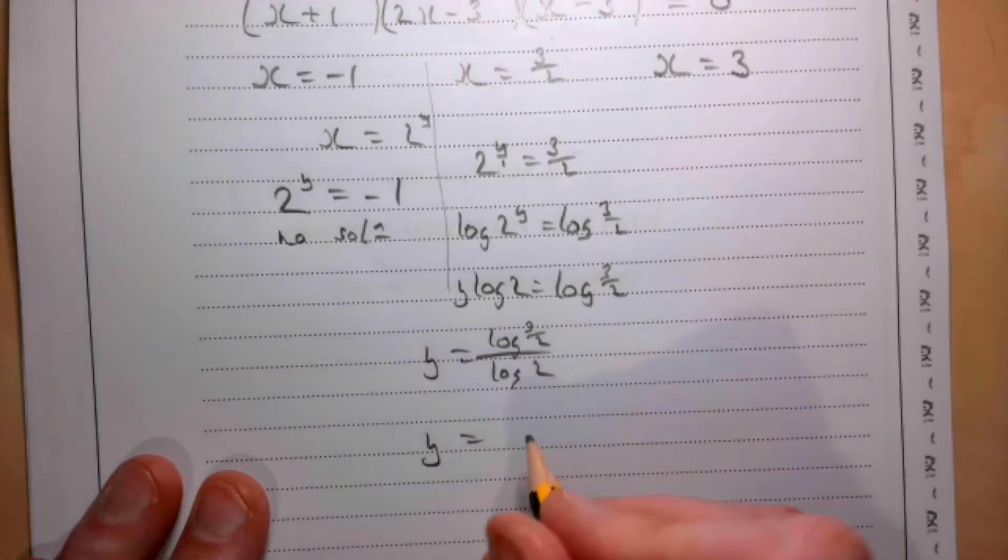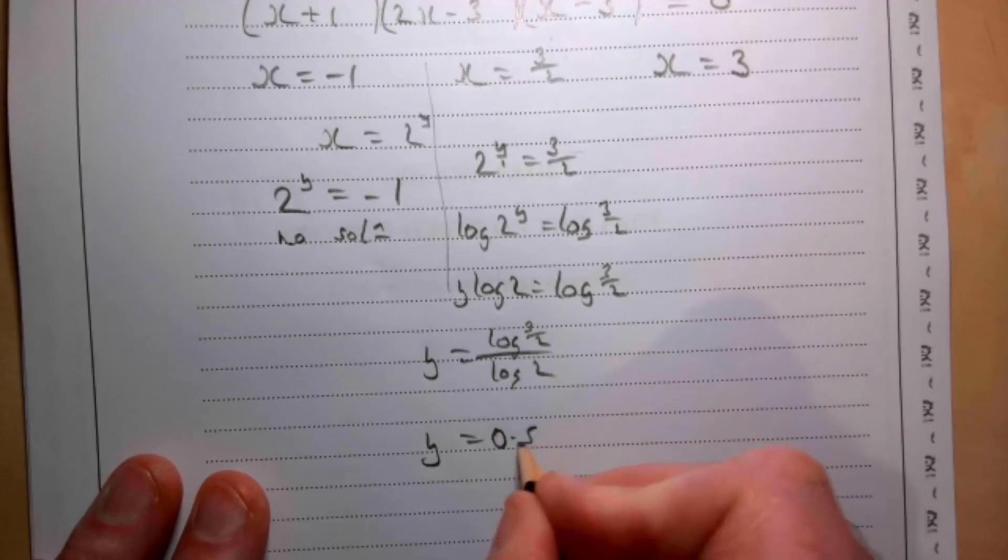So y is log(3/2) divided by log(2). Substitute that into your calculator, and the answer is 0.585.